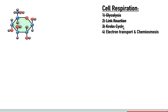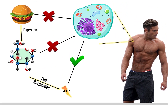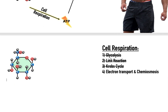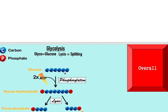Glycolysis is the first stage. Cell respiration is the process of breaking down glucose into ATP, because ATP is like money for our cells. Just like in daily life we cannot survive without money — we need to buy food, pay people — ATP is what cells use to pay all the organelles to do their jobs. Without ATP the cell cannot survive, and if the cell cannot survive, we cannot survive.